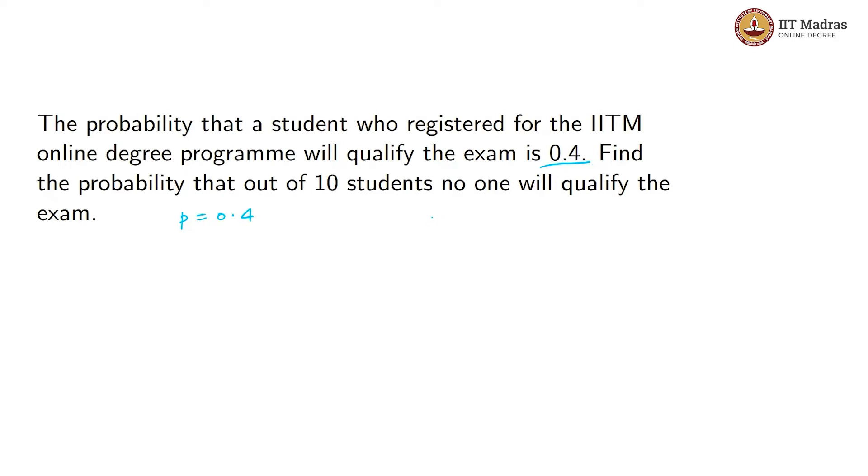In this scenario, X can take values 0, 1, 2 up to 10. This means no student will qualify, one student will qualify, or all 10 students will qualify the exam. Our question is: what's the probability that no one will qualify?